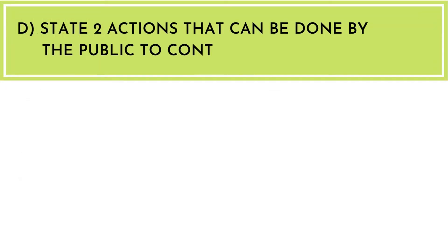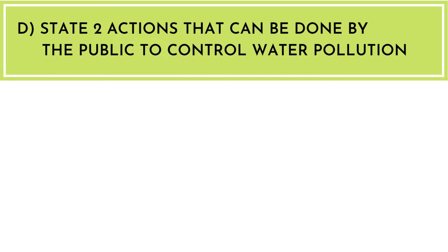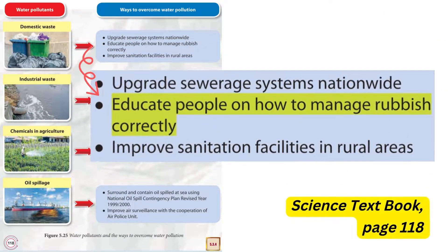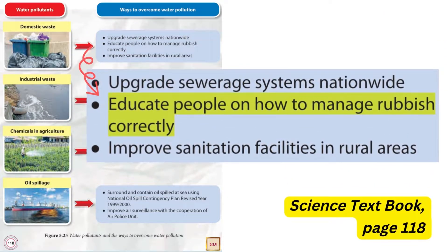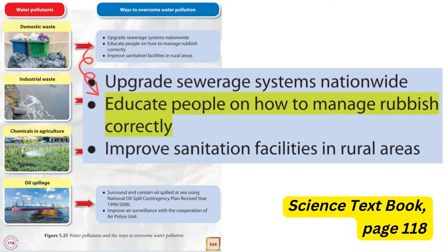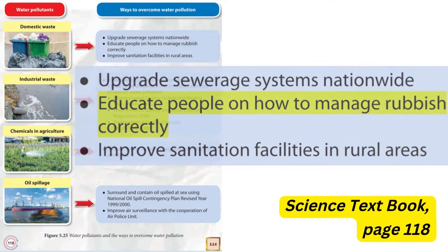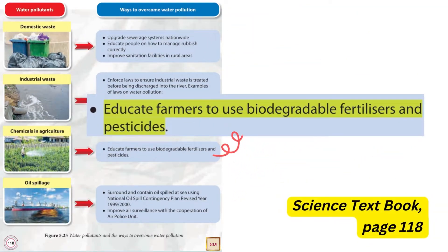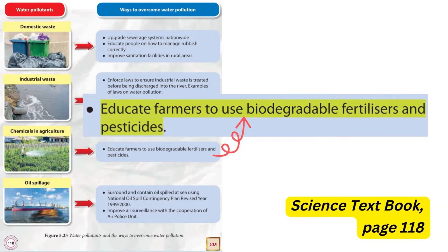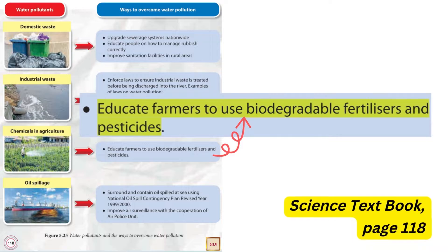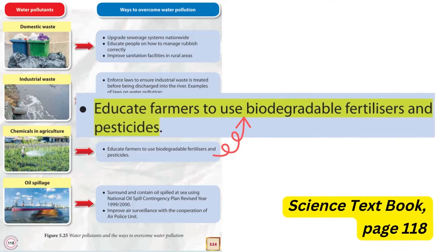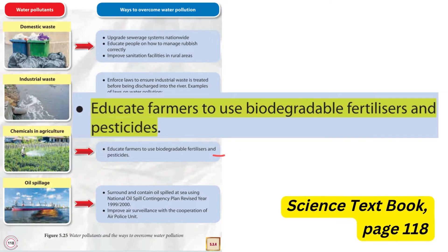State two actions that can be done by the public to control water pollution. In the textbook, page 118, several ways to overcome water pollution are displayed. So let's just choose some as the answers.